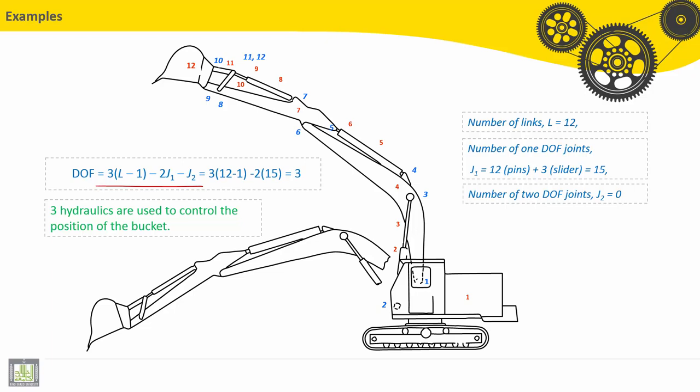So number of links here, L equals 12. The first one is considered as the ground: 2, 3, 4, 5, 6, 7, 8, 9, 10, 11, and 12 links. 12 solids.